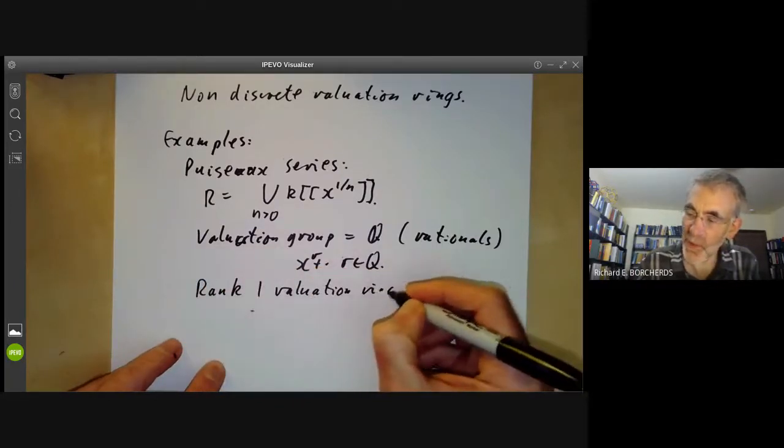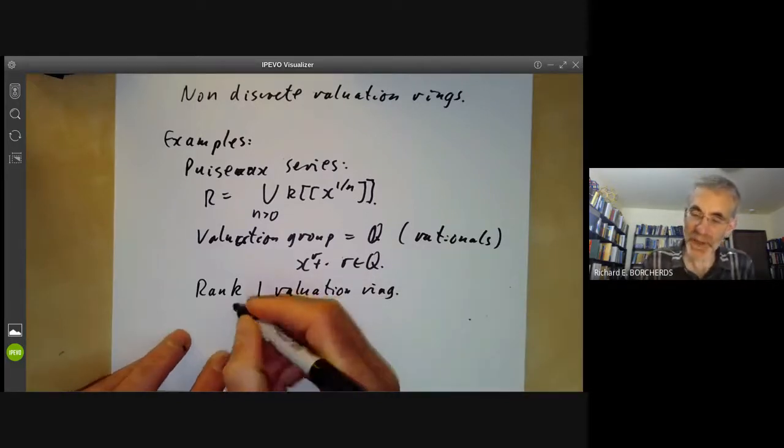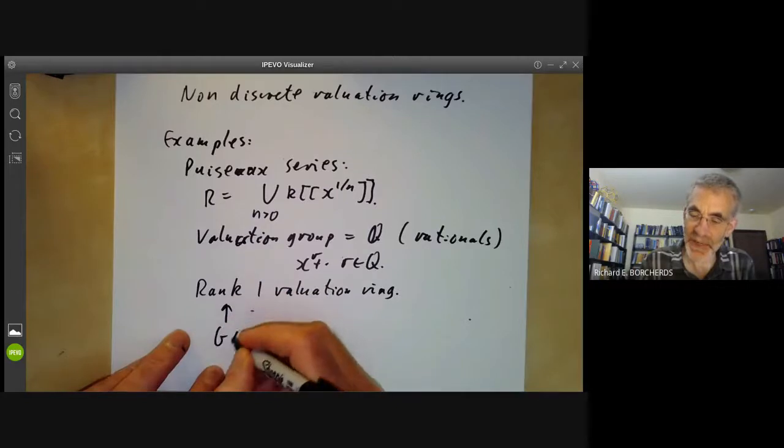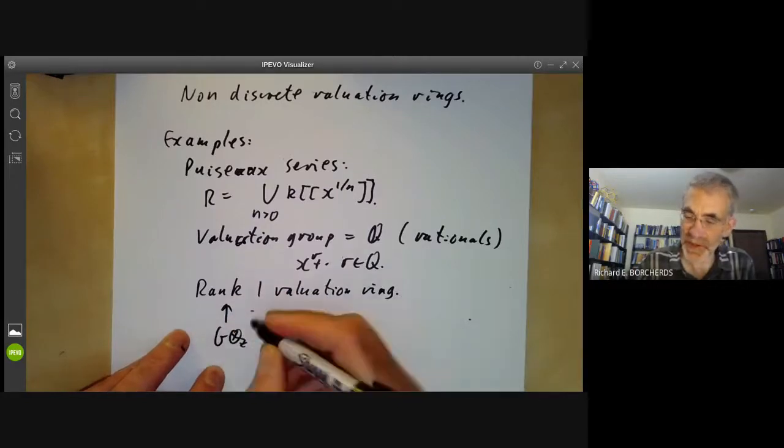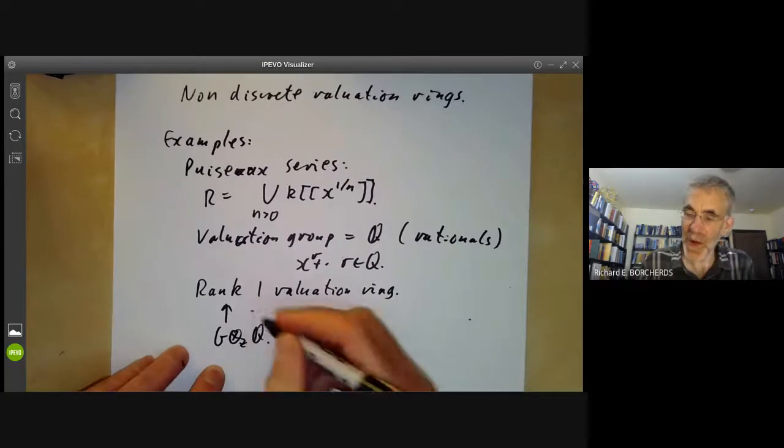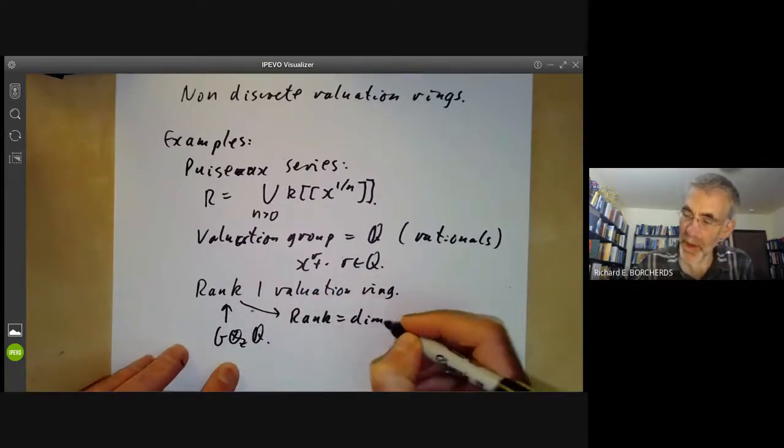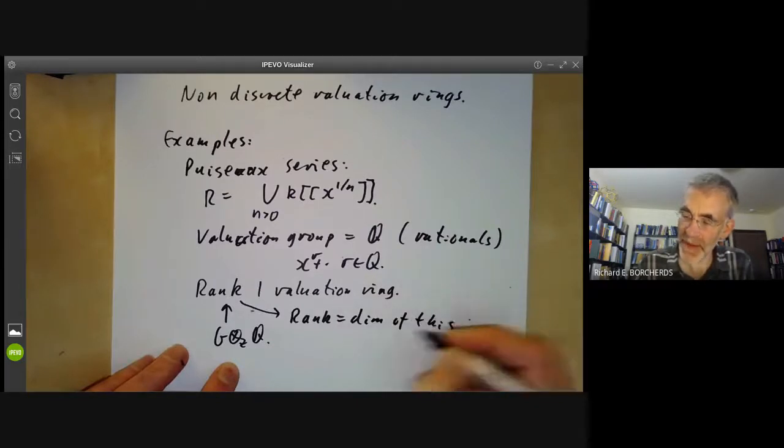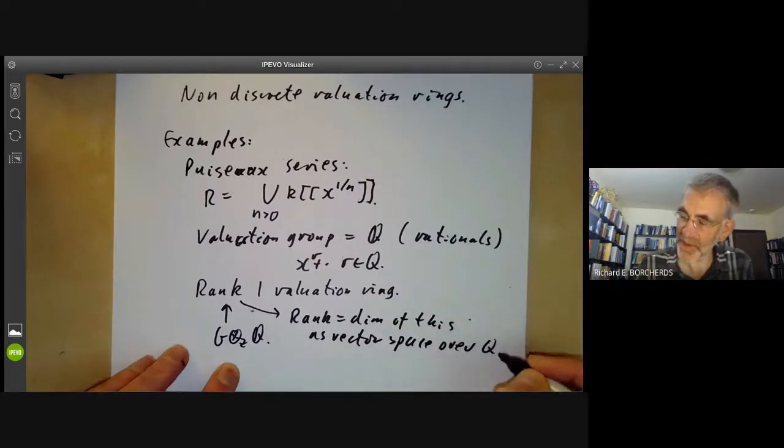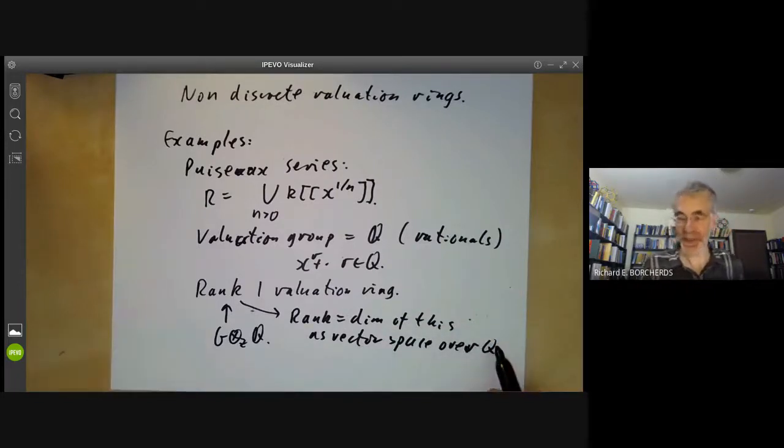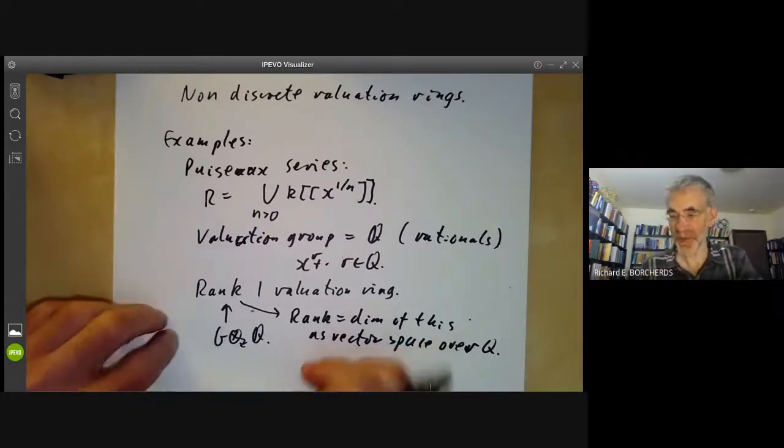And the valuation group is now the rationals Q. Because a formal power series can start with X to the R for R any rational number. And it's an example of a rank one valuation ring.